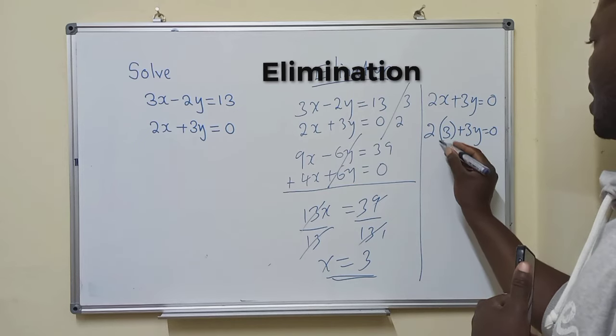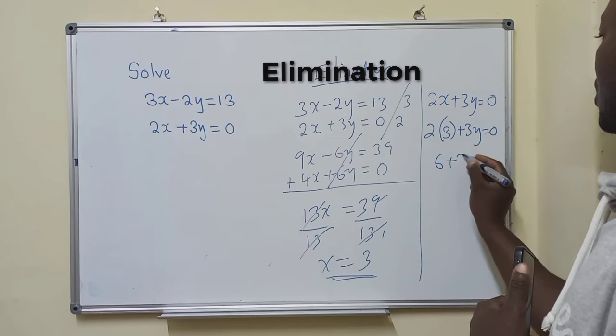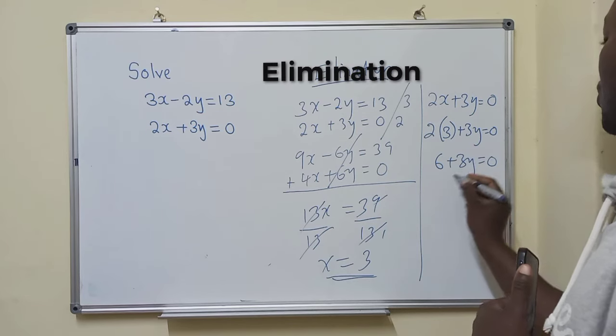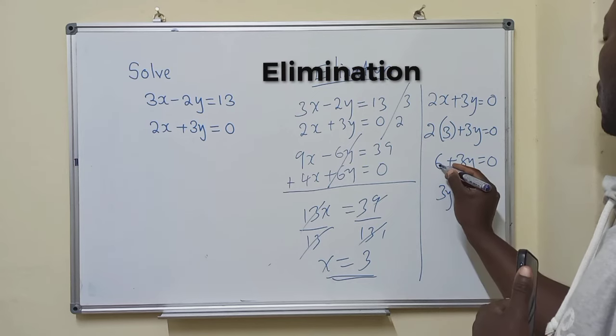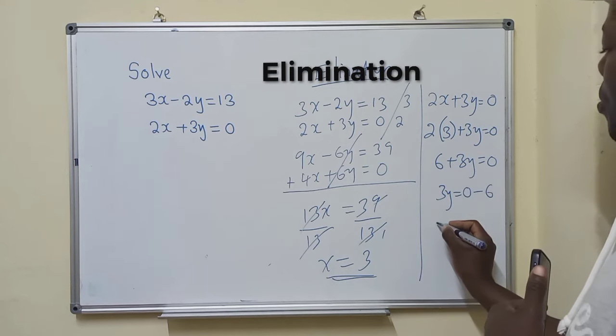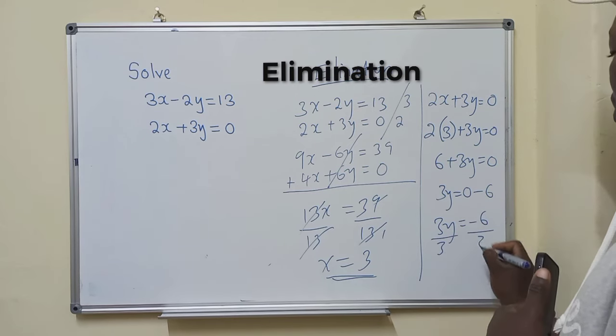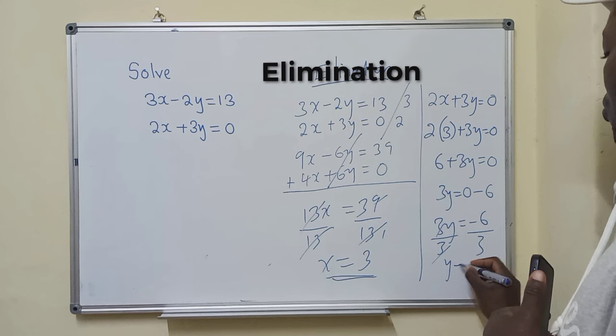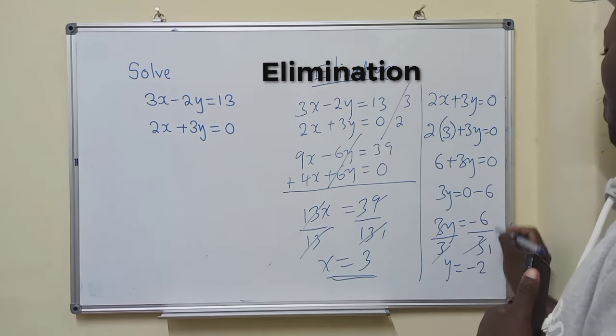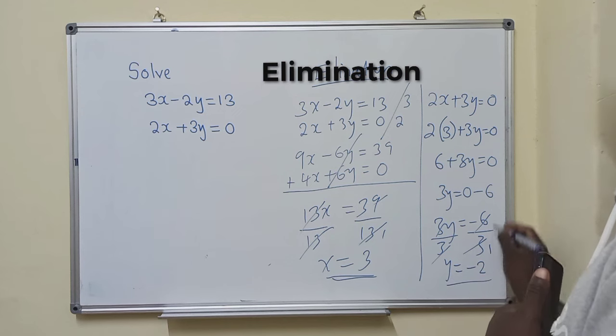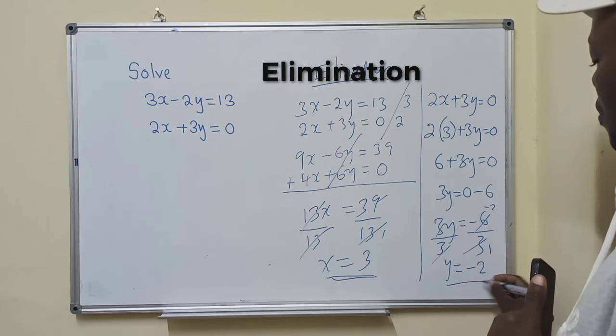When we multiply here, we're getting 6 plus 3y equals 0. We group the like terms. We have 0 minus 6. This is positive. It comes this side, it will be minus. So we have 3y equals negative 6. We divide by 3. Y will be equal to negative 2. So our answer is negative 2.